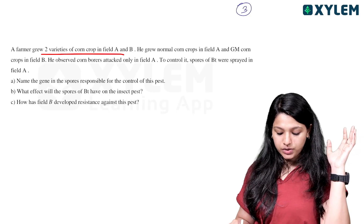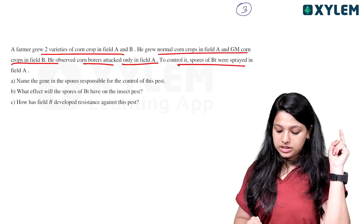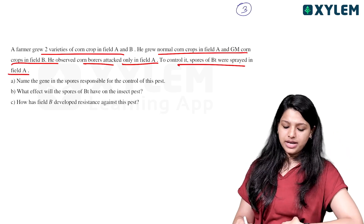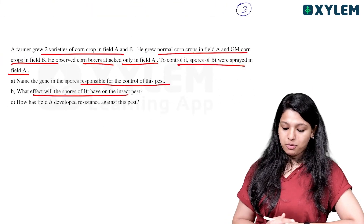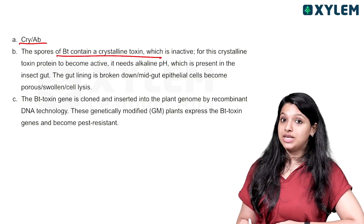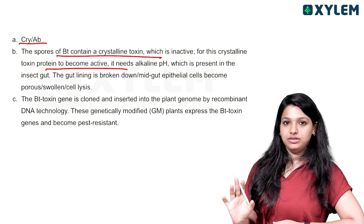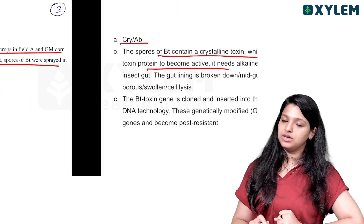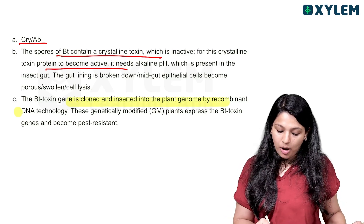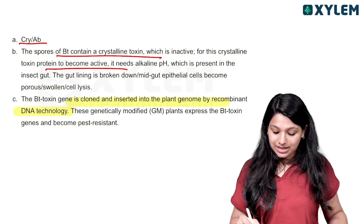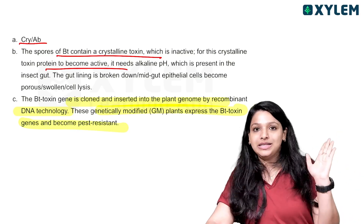A farmer grew two varieties of corn: normal corn in Field A and GM crops in Field B. Corn borers attacked only Field A. To control them, spores of Bt were sprayed in Field A. The Bt spores contain crystallized toxin that becomes active in the insect pest. Field B developed resistance because Bt toxin gene was cloned and inserted into the plant genome by recombinant DNA technology. These genetically modified plants express the Bt toxin gene and become pest resistant.